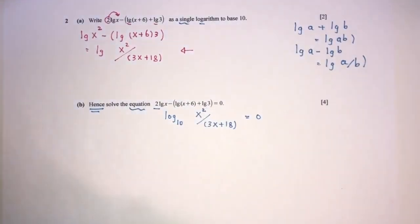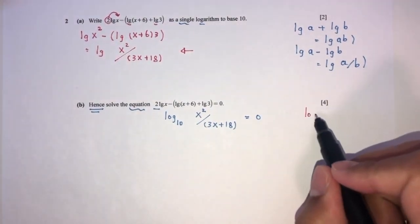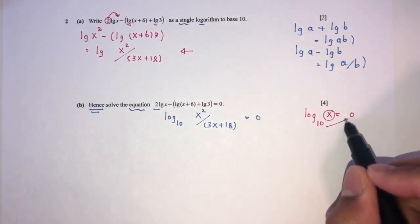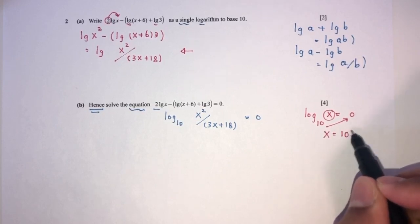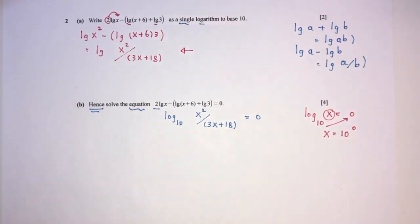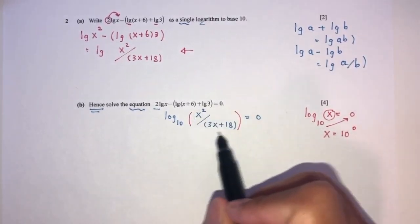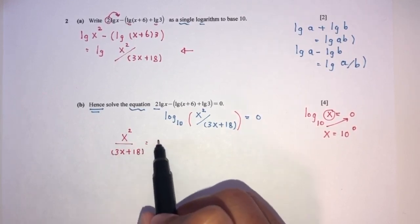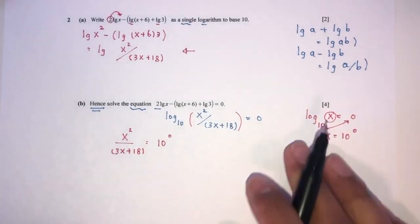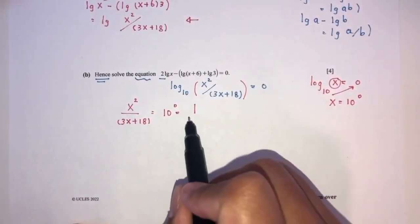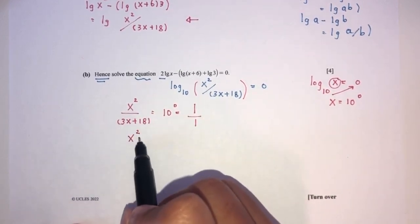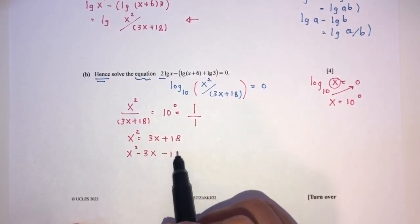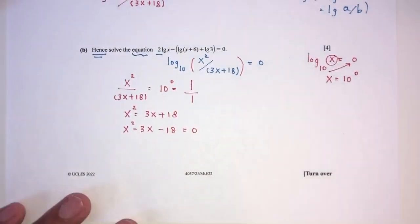To solve this: if log base 10 of something equals 0, we send the base to the other side, giving that value equals 10 to the power 0, which is 1. So we cross multiply: x squared equals 3x plus 18, giving x squared minus 3x minus 18 equals 0.